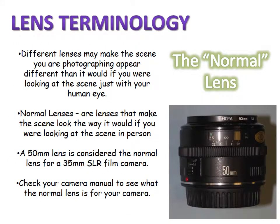The normal lens: different lenses may make your scene look different than it would to the human eye. Normal lenses make the scene look the way it would if you were viewing it in person. A 50mm lens is considered the normal lens for a 35mm SLR film camera. There are factors like the diameter of the film plane that go into determining the normal lens for your camera — check your camera manual. But 50mm is the starting point for discussing lenses.